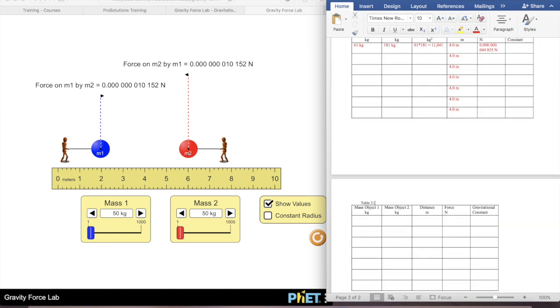For what they call table two, that's what they're calling trial two up there. So we're calling our first mass 50 kilograms. Second mass is 50 kilograms.